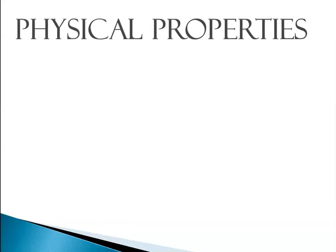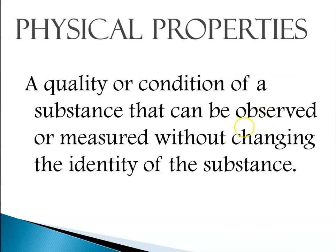So let's talk about physical properties. Any quality or condition of a substance that you can either observe or measure without changing the identity of the substance is a physical property. That is your gold standard for determining if it's a physical property or a chemical property — ask yourself, is it still the same substance? If the identity of the substance is the same, it was a physical property.